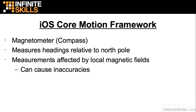The compass is exactly what you would expect — it measures headings relative to the North Pole, and it uses magnetic fields to do that. So if you happen to have a magnet right next to your phone, it might not actually measure the North Pole; it might instead measure where your magnet is. But that's the way a normal compass would work anyway, so that can cause inaccuracies — just be aware of that.